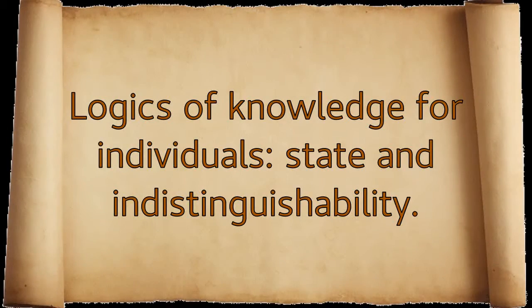For semantics, we need a formal treatment of the logics of knowledge for individual agents within a group. Crucial to the approach of epistemic logic is the use of Kripke semantics, which uses a special case of Kripke models. In such a model, two notions are of main importance: the state and the indistinguishability.